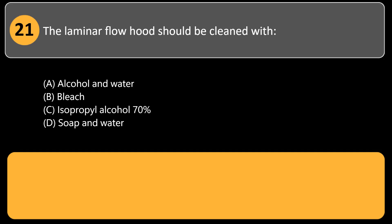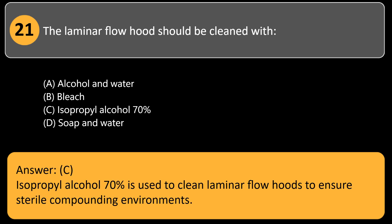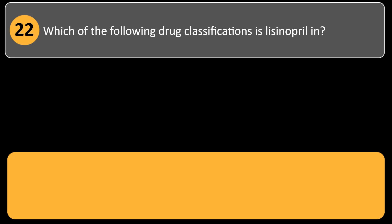The laminar flow hood should be cleaned with: A) alcohol and water, B) bleach, C) isopropyl alcohol 70%, D) soap and water. Answer: C. Isopropyl alcohol 70% is used to clean laminar flow hoods to ensure sterile compounding environments.